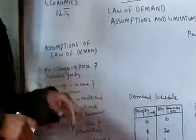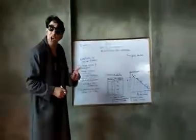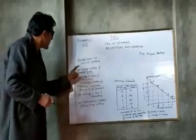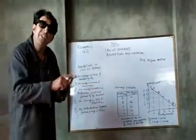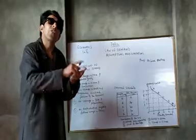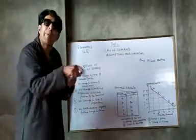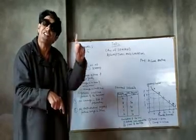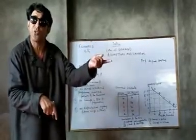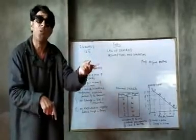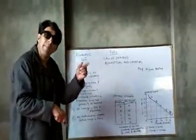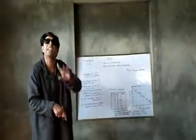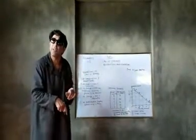The first assumption is no change in the price of a related commodity. The law is based on the assumption that there is no change in the price of related goods — substitute goods or related goods of a particular commodity. The law is not applicable when there is a change in the price of its substitute or related good.